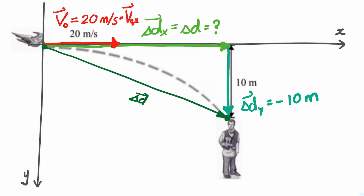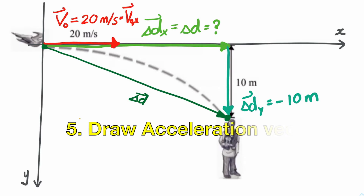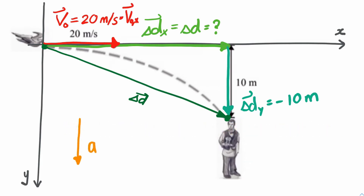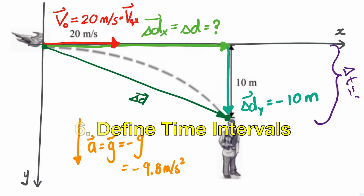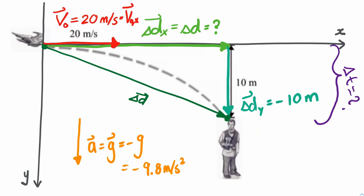Next we look at the acceleration vector. Since we are on Earth, acceleration is provided by gravity, pointing downward, so we take it as negative g, approximately 9.8 meters per second squared. This whole motion occurs during some time interval delta t, which we don't know, so we leave it as a question mark. So our steps so far: visualize, coordinate system, displacement, velocity, acceleration, then consider time intervals.